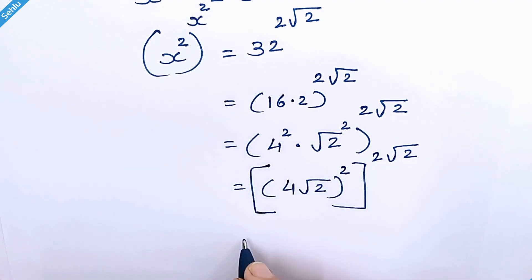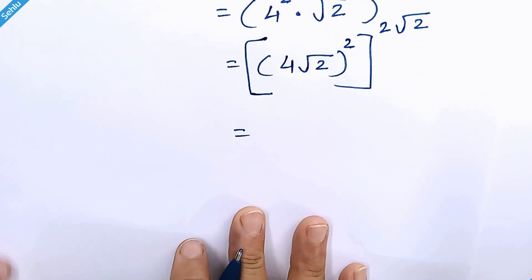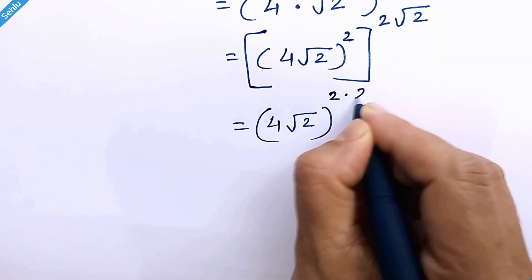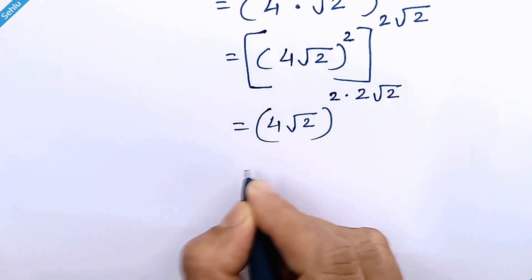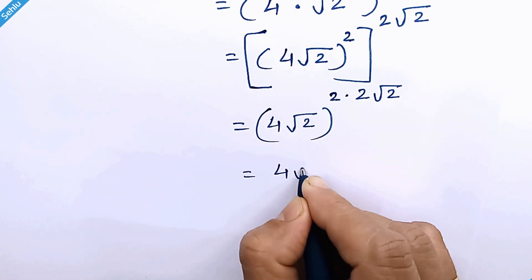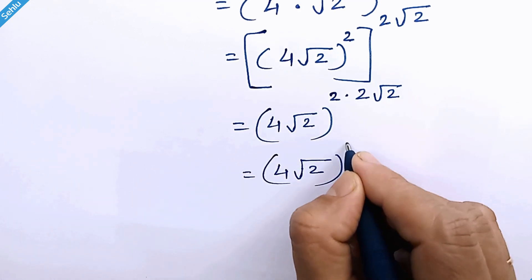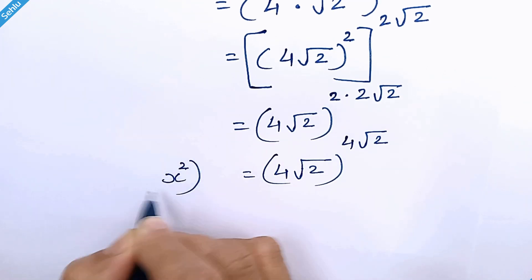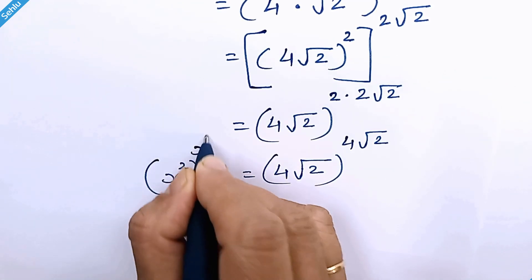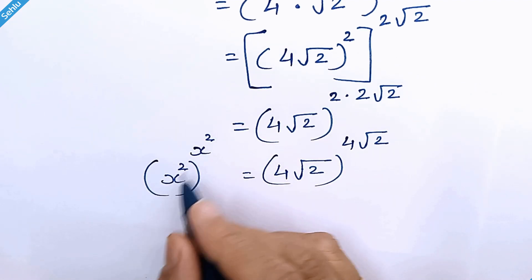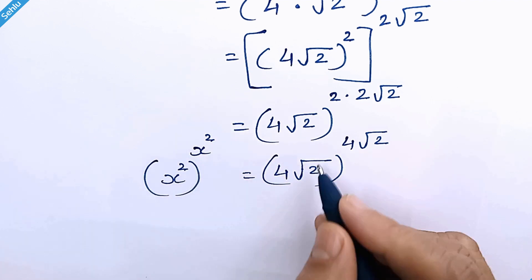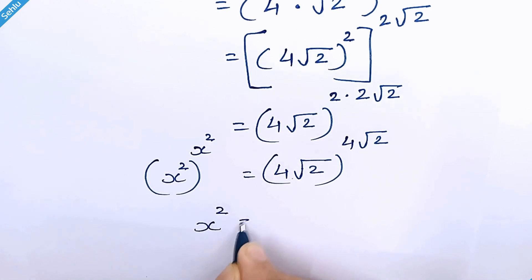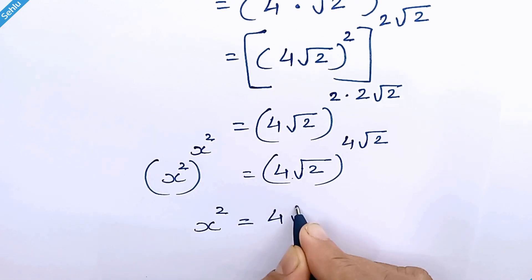Multiplying the exponents gives 4 times square root of 2, whole raised to 4 times square root of 2. So the right hand side is now 4 root 2 raised to 4 root 2. Since both sides have base and exponent the same, we can equate: x square is equal to 4 times square root of 2.